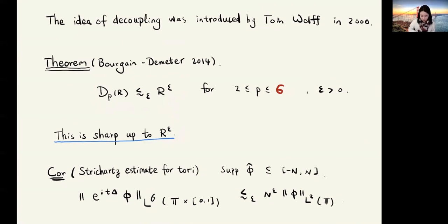There is a useful corollary that is the Strichartz estimate for torus. For example, consider a function phi with Fourier transform has frequency bounded by capital N. This N should be viewed as something like r or square root of r. Then we consider the linear solution to the Schrödinger equation with initial data phi. The L^6 norm of this solution on the one dimensional torus as a circle times the time interval 0 to 1 is bounded by a constant only depending on epsilon times N to the epsilon times the L^2 norm of the initial data on the torus.